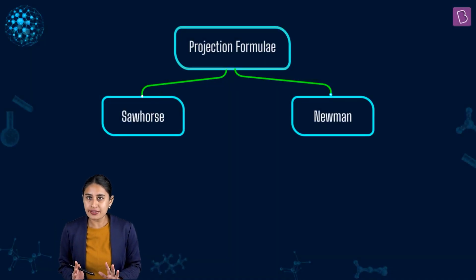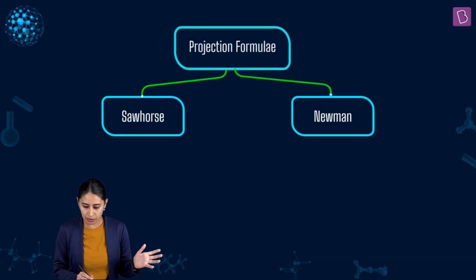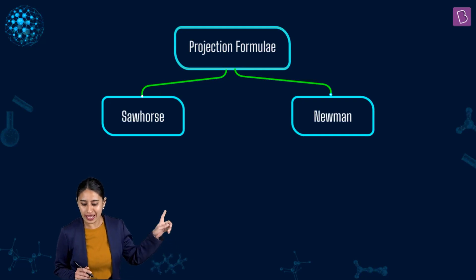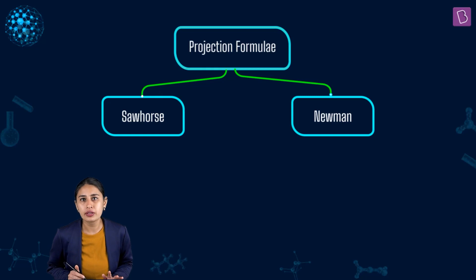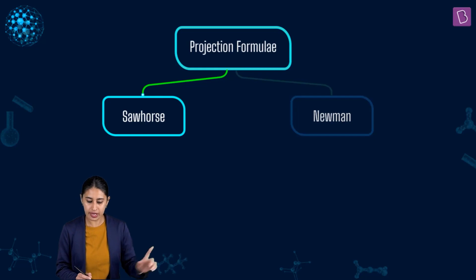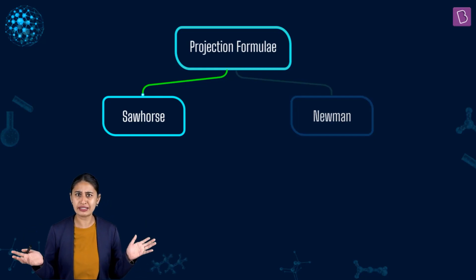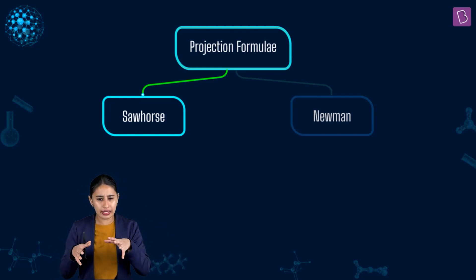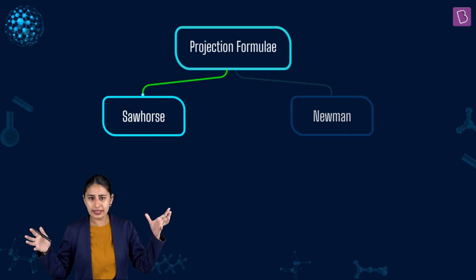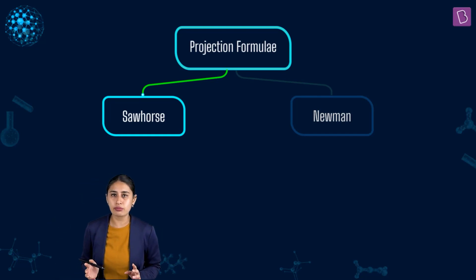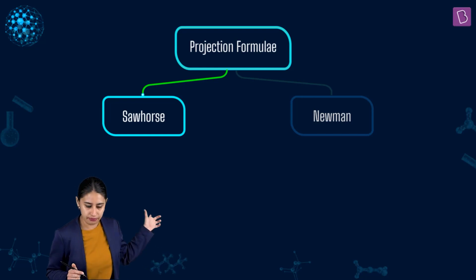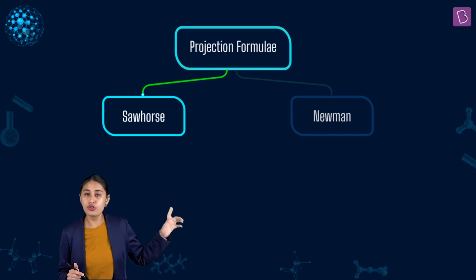Let's take the journey of conformational isomerism ahead and talk about the two types — the sawhorse and the Newman projection — that we need to know to understand conformational isomerism. Sawhorse. Newman. Very important.